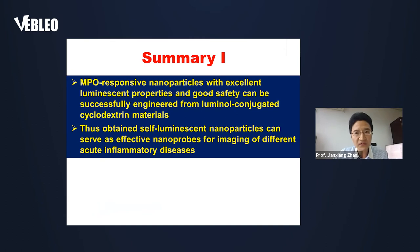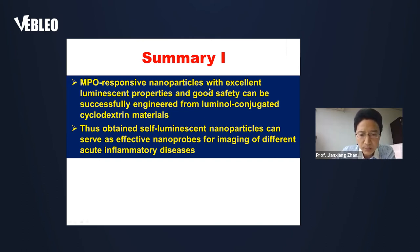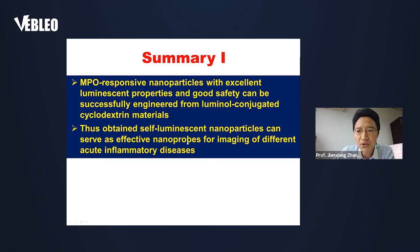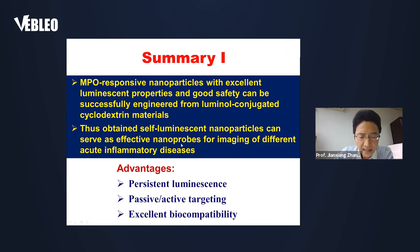As a summary of the first section: MPO-responsive nanoparticles with excellent luminescent properties and good safety can be successfully engineered from luminol-conjugated cyclodextrin materials. The thus-obtained afterglow luminescent nanoparticles can serve as effective nanoprobes for imaging of different acute inflammatory diseases. Notably, this type of luminescent nanoprobes have multiple advantages, such as persistent luminescence, passive and active targeting capability, and excellent biocompatibility.